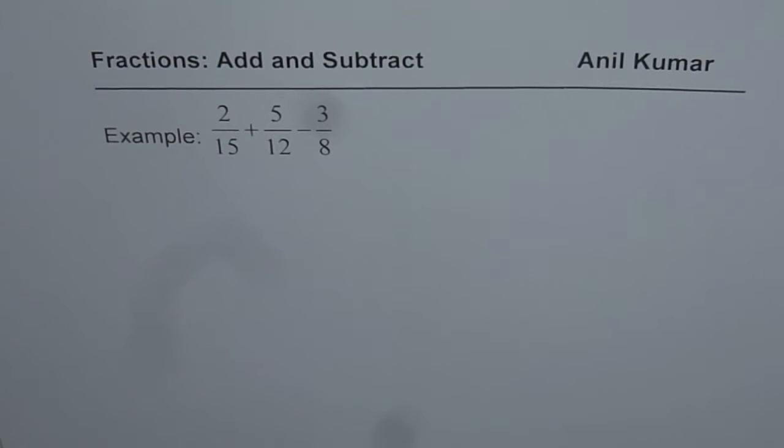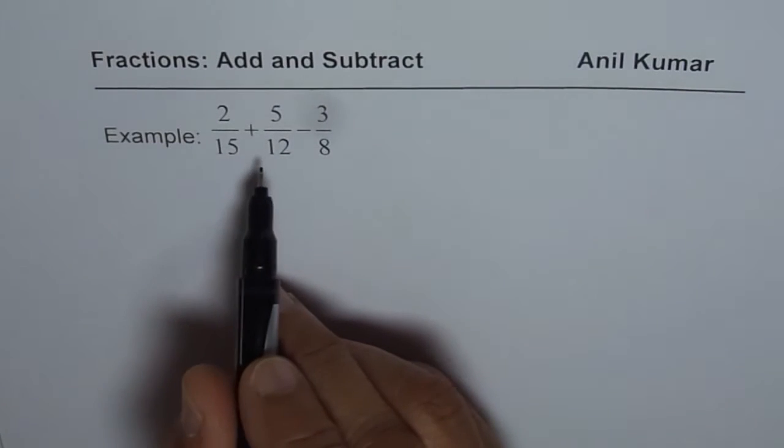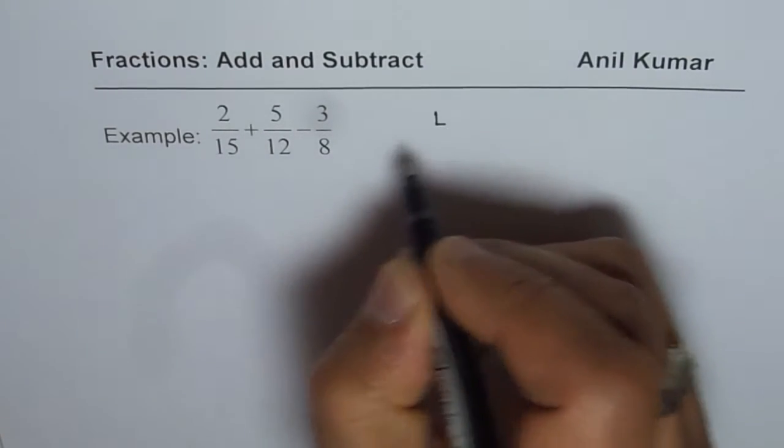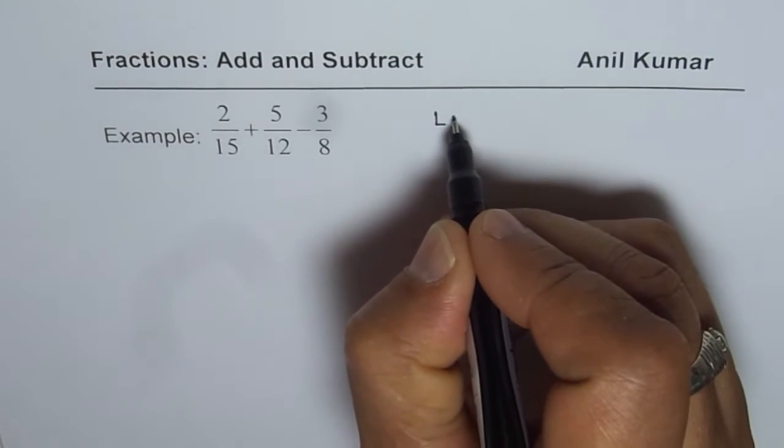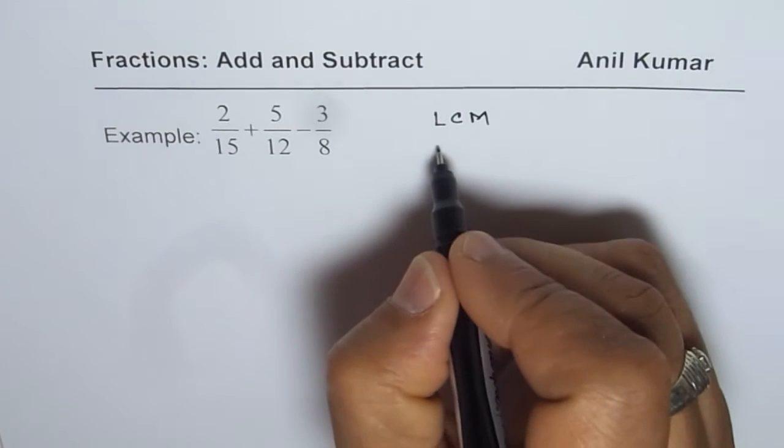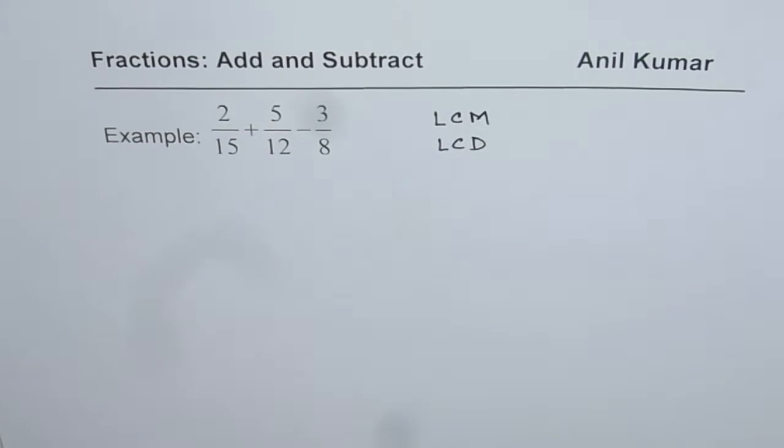By any standard this is a complicated question for our middle school students. Now, to add or subtract fractions what do we need? We need least common multiple or sometimes we say common denominator. We are looking for LCM, least common multiple, sometimes we say least common denominator. Both are the same things.